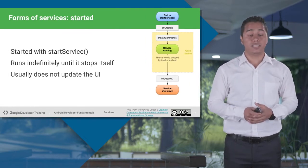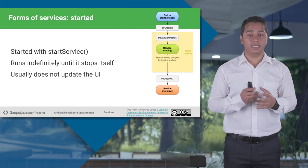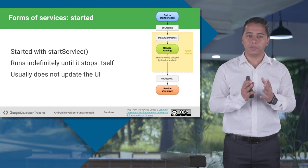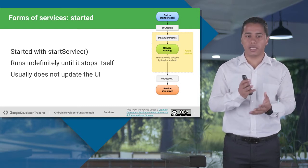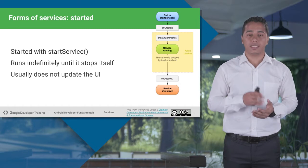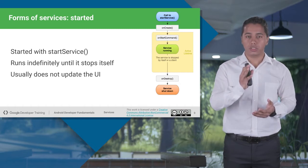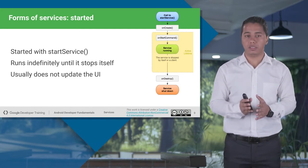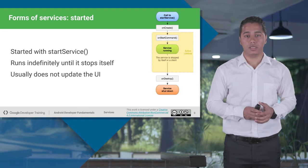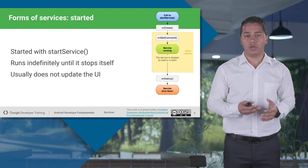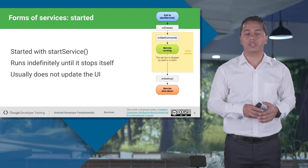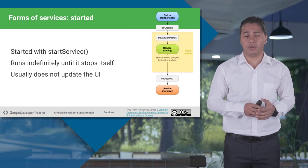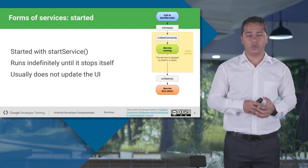A started service is always called with a method named startService. Once you call this method, your started service will begin executing. A started service, when executing, runs indefinitely — it's the developer who needs to provide the code to stop that service. You can stop your service by calling stopService or there is a method called stopSelf. It runs indefinitely until it stops itself, and it will not update your UI.